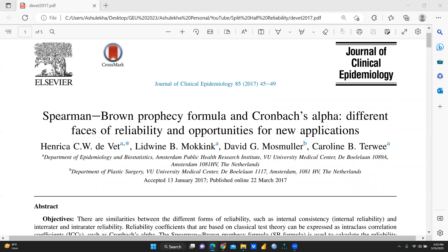So here is Spearman-Brown prophecy formula and Cronbach's alpha: different phases of reliability and opportunities for new applications. You can see here this paper is already published in Journal of Clinical Epidemiology, volume 85, 2017. These are the page numbers and the publisher is Elsevier. Now you can see here it's a very good paper. I've been sharing this paper and I'm going to share it with you in my description box also.